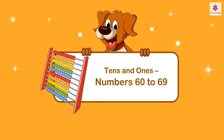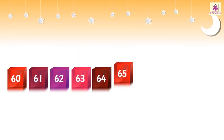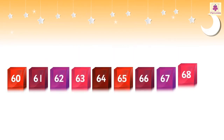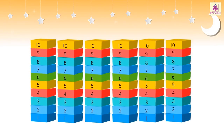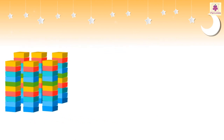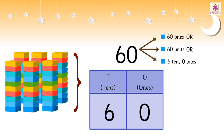Tens and ones: numbers 60 to 69. We shall now learn more about numbers from 60 to 69. 59 and one more is 60. Six tens together make 60. We call this 60 ones, or 60 units, or six tens and zero ones.